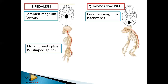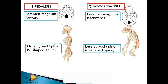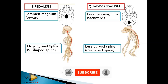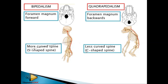Number two: more curved spine — you can also say S-shaped spine. Just write one term to get a mark. For bipedal organisms the spine is S-shaped, which allows compression from the top. For quadrupedal organisms the spine is C-shaped, meaning less curved. You can say 'more curved spine' or 'S-shaped spine' for bipedal, and 'less curved spine' or 'C-shaped spine' for quadrupedal.